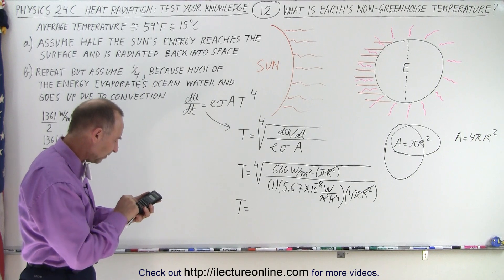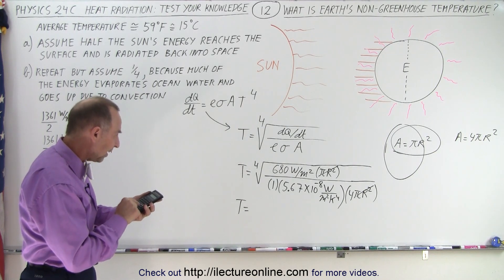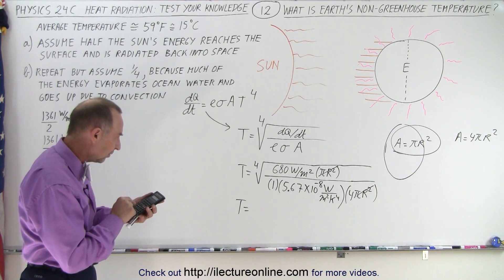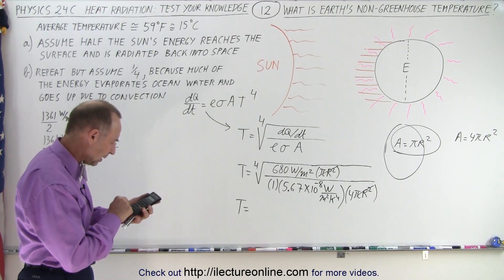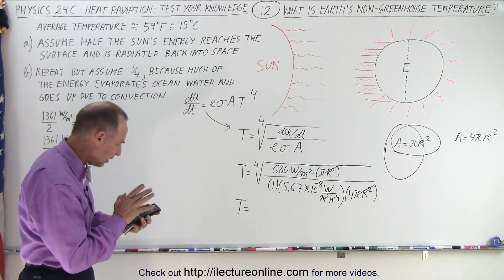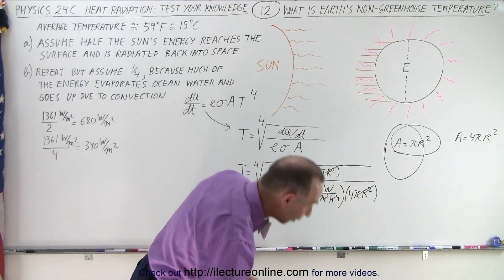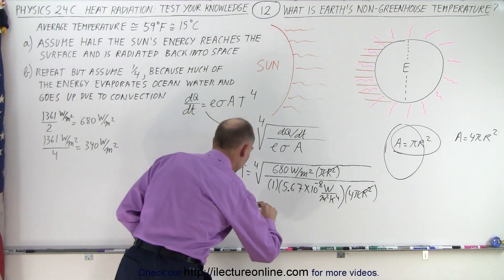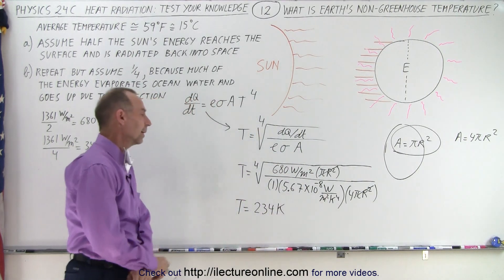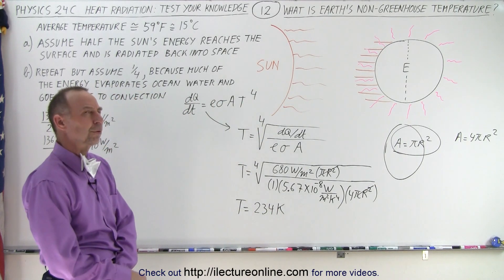So we have 680 divided by 5.67 E to the minus 8 divide by 4 equals take the square root take the square root and there it is 234. So this is equal to 234 Kelvin. All right 234 Kelvin.